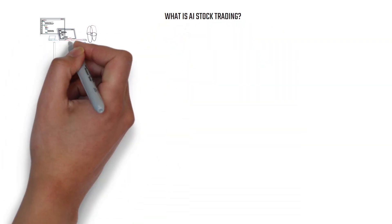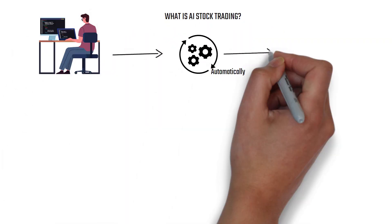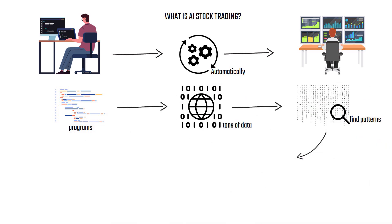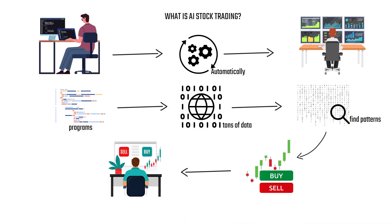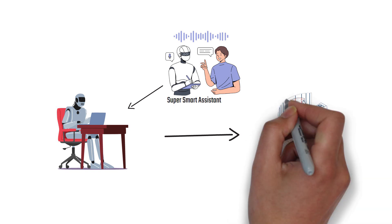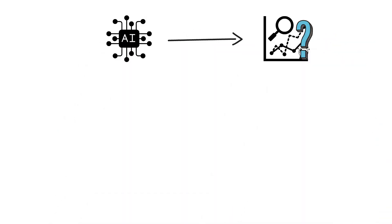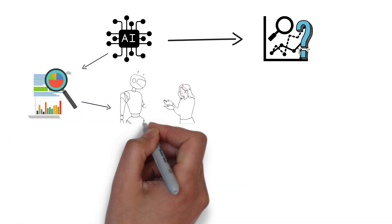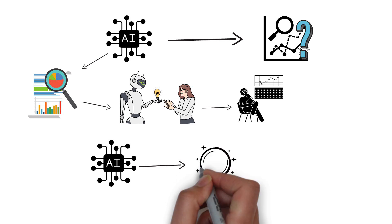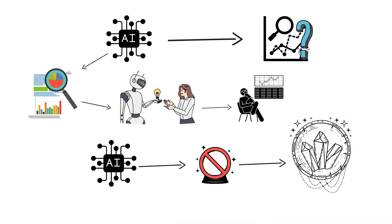First of all, what is AI stock trading all about? It's like using computer programs to automatically trade stocks. These programs look at tons of data, find patterns, and buy or sell stocks without you having to do it yourself. It's like having a smart assistant tirelessly working for you on the stock market. Can AI predict the future of the stock market? Well, it can analyze lots of data and give us some hints about what might happen, but it is not a crystal ball to see into the future.